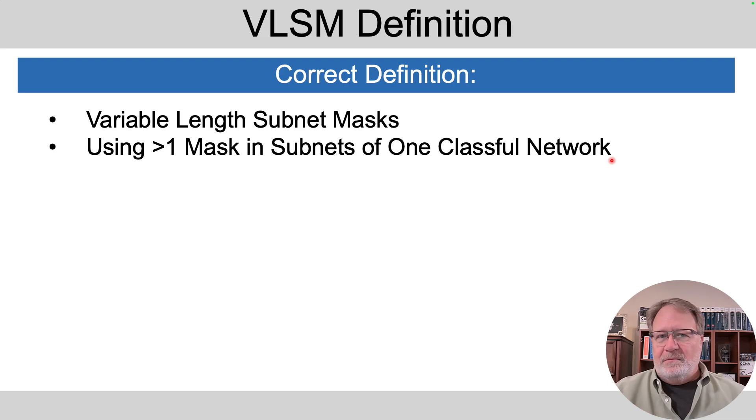So your starting point, more often than not, is either a public class A, B, or C network or a private class A, B, or C network. Any of those, if you make the design choice to use more than one subnet mask in the different subnets of one network, that's VLSM.